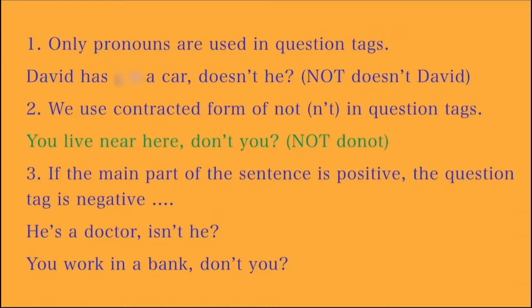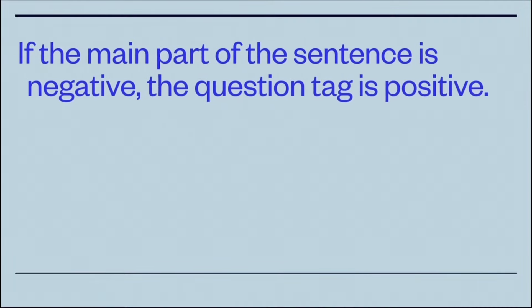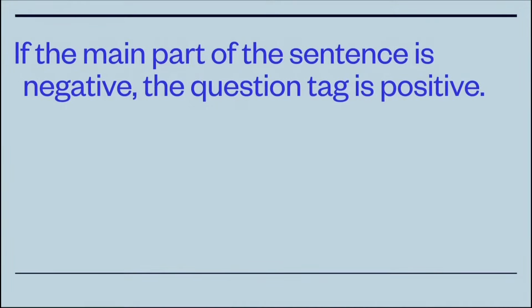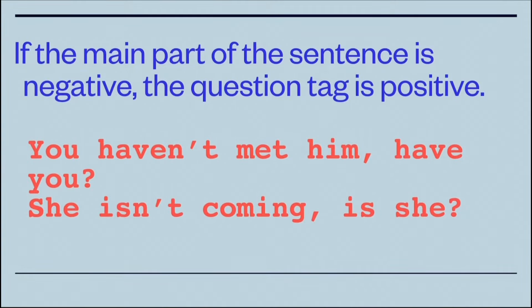If the main part of the sentence is positive, the tag is negative, and vice versa. If the statement is negative, the tag will be positive. For example, 'He's a doctor, isn't he?' or 'You work in a bank, don't you?' If the main part of the sentence is negative, the question tag is positive — for example, 'You haven't met him, have you?'